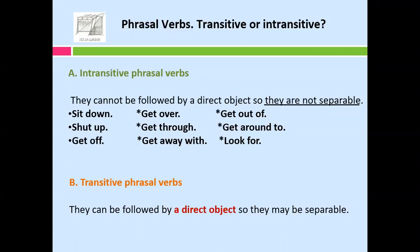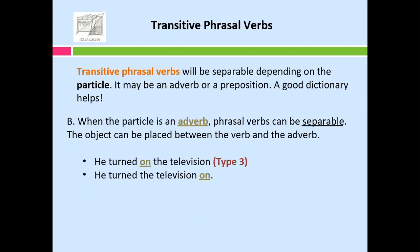Transitive phrasal verbs can be followed by a direct object, so they may be separable. When the particle is an adverb, the object can be placed between the verb and the adverb. For example: 'He turned on the television,' 'He turned the television on,' or — if you replace 'television' with an object pronoun — 'He turned it on.' You can say it three ways.